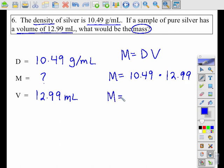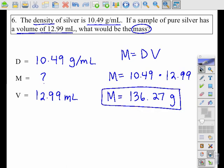Go ahead and calculate that, round to two decimal places, and you're going to get 136.27, and then mass is measured in grams.